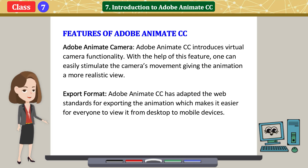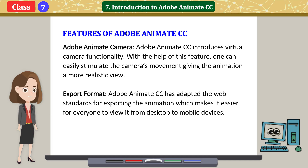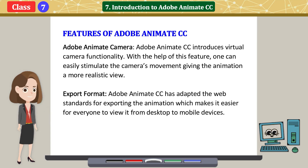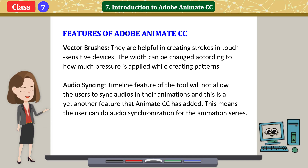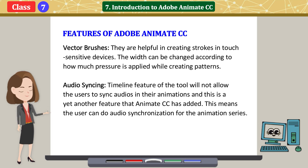Adobe Animate Camera. Adobe Animate CC introduces virtual camera functionality. With the help of this feature, one can easily simulate the camera's movement giving the animation a more realistic view. Export Format. Adobe Animate CC has adapted web standards for exporting animation which makes it easier for everyone to view it from desktop to mobile devices. Vector Brushes are helpful in creating strokes in touch-sensitive devices; the width can be changed according to how much pressure is applied. Audio Syncing allows the user to sync audios in their animations and do audio synchronization for the animation series.